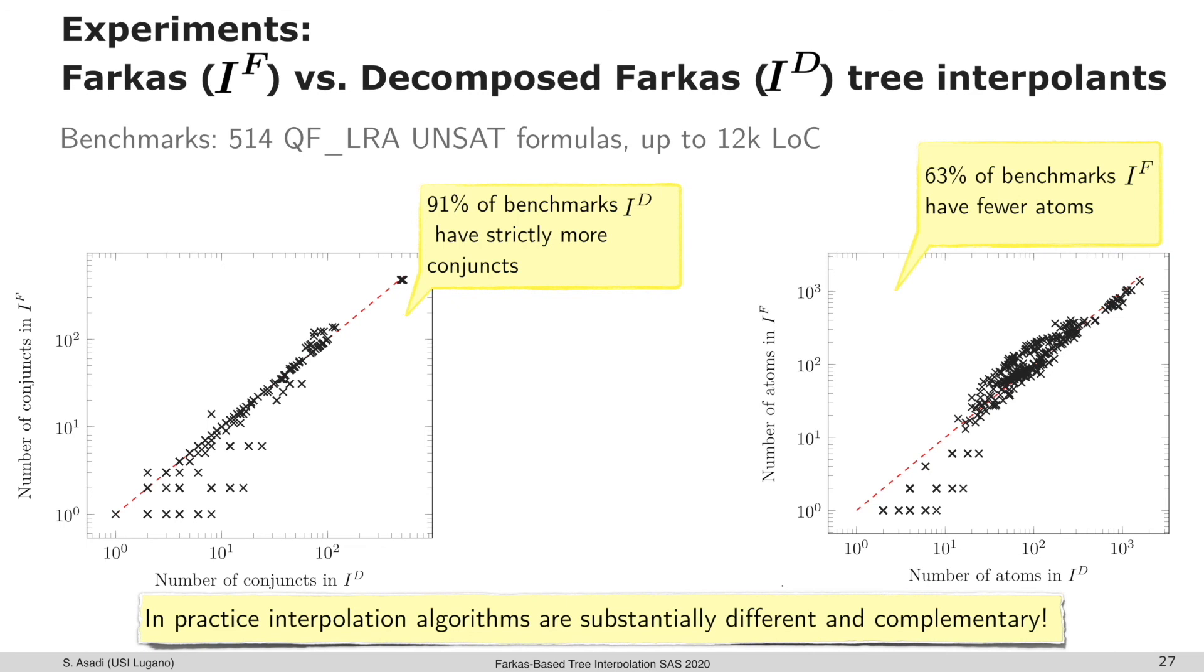The result is on 91% of the benchmarks, decomposed interpolants have more conjuncts. This is pretty nice because the number of top-level conjuncts could be a measure of flexibility on the interpolants.